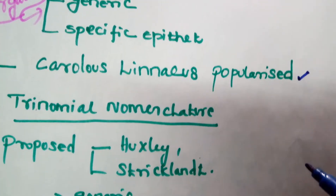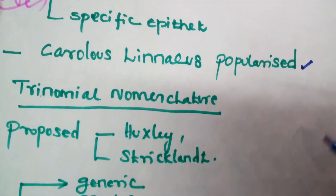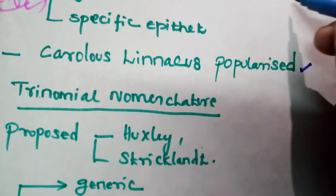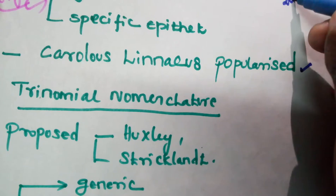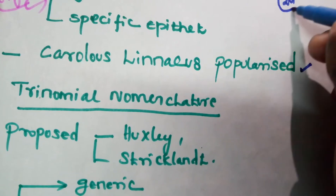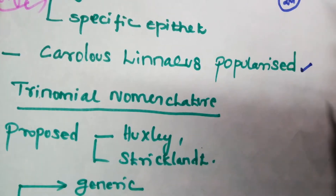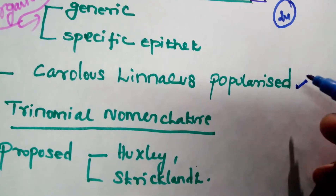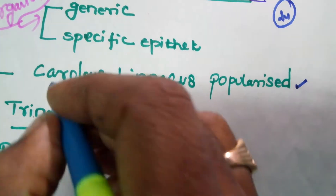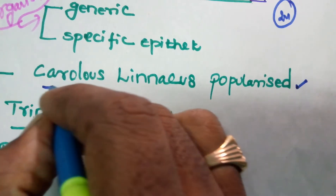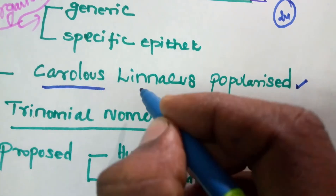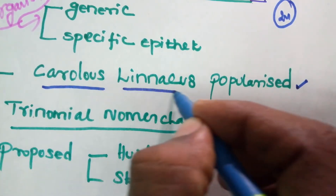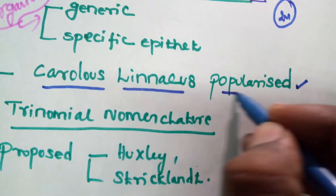Next, two-mark questions on binomial nomenclature: Who gave the binomial nomenclature? Carolus Linnaeus popularized the binomial nomenclature.